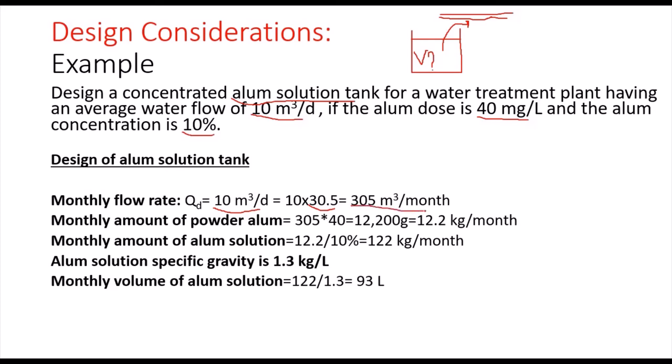So we are treating 305 cubic meters of water every month. Now the amount of powder alum will be 305 times 40, which is the alum dose. We will get 12,200 grams, which is equivalent to 12.2 kilograms per month. The monthly amount of alum solution will be 12.2 divided by the 10%, so we will need 122 kilograms per month. So here you will have an idea also about the cost of the alum powder.